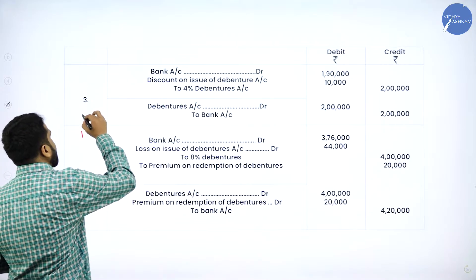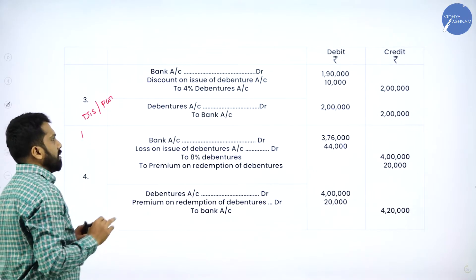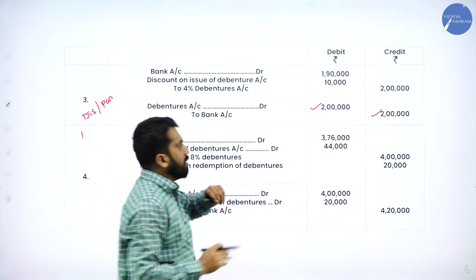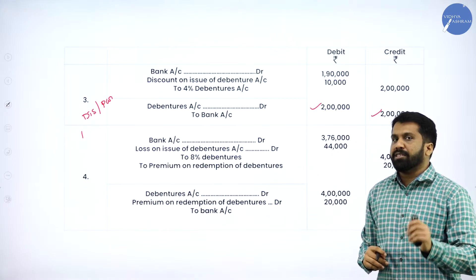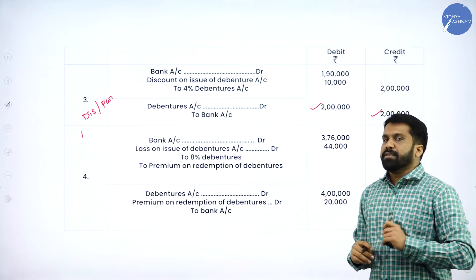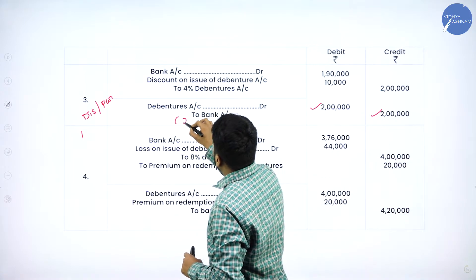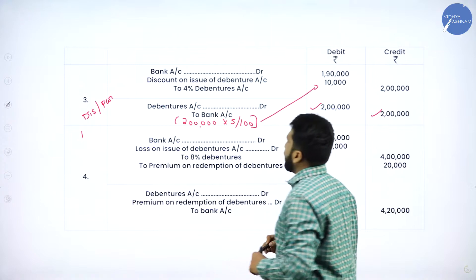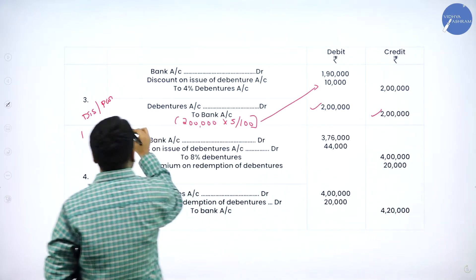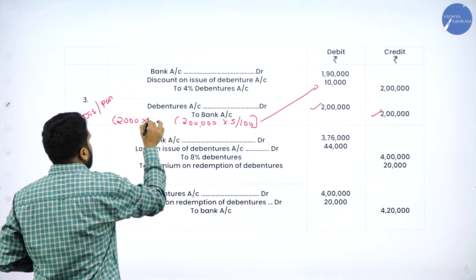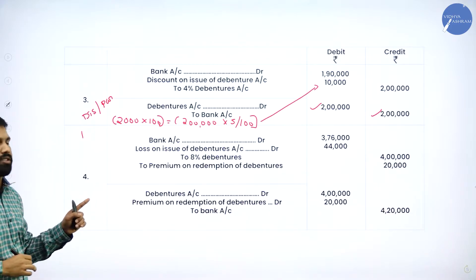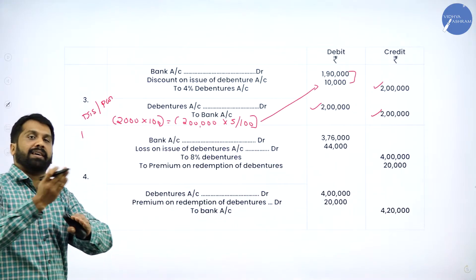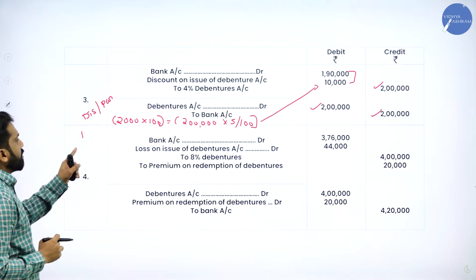For the third statement, issued at discount, redeemable at par: 2,000 shares gives 2 lakh. What is the discount value? 5%. So 5% on 2 lakh: 2 lakh multiplied with 5 divided by 100 gives 10,000. How did you get 2 lakh? 2,000 multiplied with 100. Your total debenture value is 2 lakh, and since there is a discount of 10,000, bank receives 1,90,000 (2 lakh minus 10,000). Third statement is done.